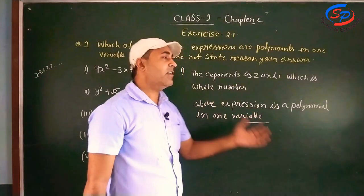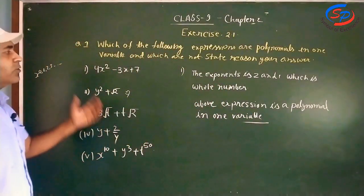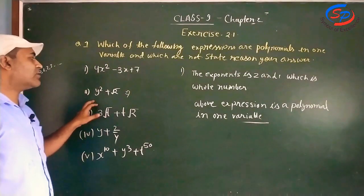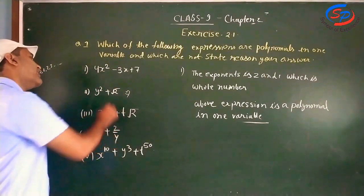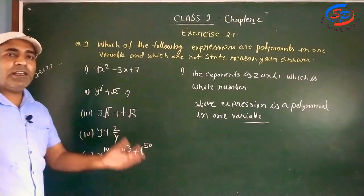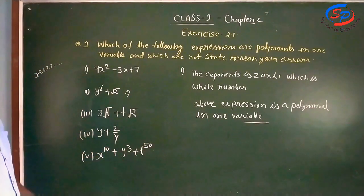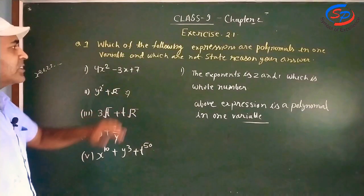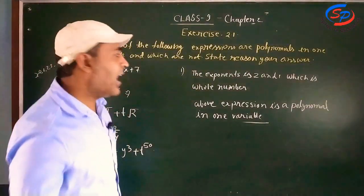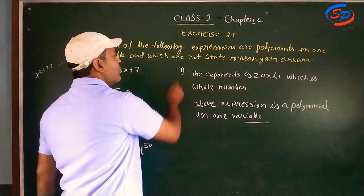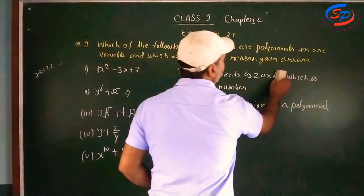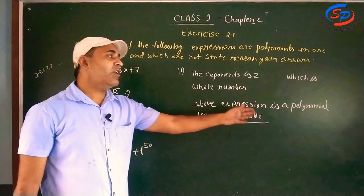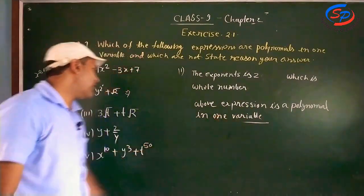Now question number 2: y squared plus root 2. The exponent of y is 2, which is a whole number. So the above expression is a polynomial in one variable because there is only one variable.